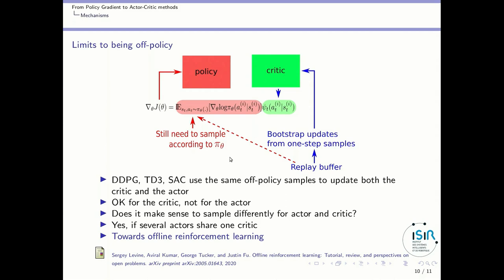A question you may ask is: does it make sense to use different samples to update the critic and to update the actor? Actually, it does. For instance, if you are using several workers — several actors interacting with the environment sharing one critic — then the samples used to update the critic do not need to be the same as those of the different agents. Each agent can use its own samples to update its actor, but all agents' samples to update the critic.